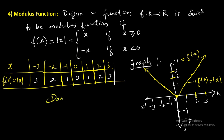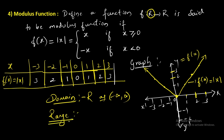The domain of the modulus function is the set of real numbers, or minus infinity to plus infinity. The range: after substituting x values we get y values called images, and the collection of images is the range. Here we get only positive real numbers including 0, so the range is the interval from 0 to infinity, including 0.